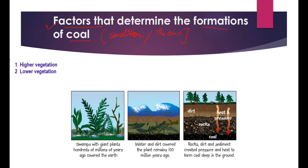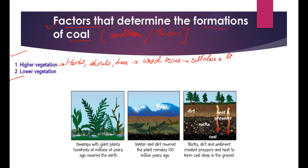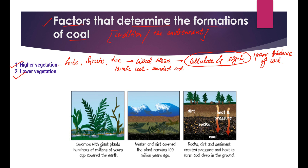There are two kinds of vegetation. First is higher vegetation, which includes herbs, shrubs, and trees. These grow on plains, plateaus, and mountain regions and have wood tissue. They are rich in cellulose and lignin, which are the mother substances of coal. These plants basically form humic coal, which is banded in nature.